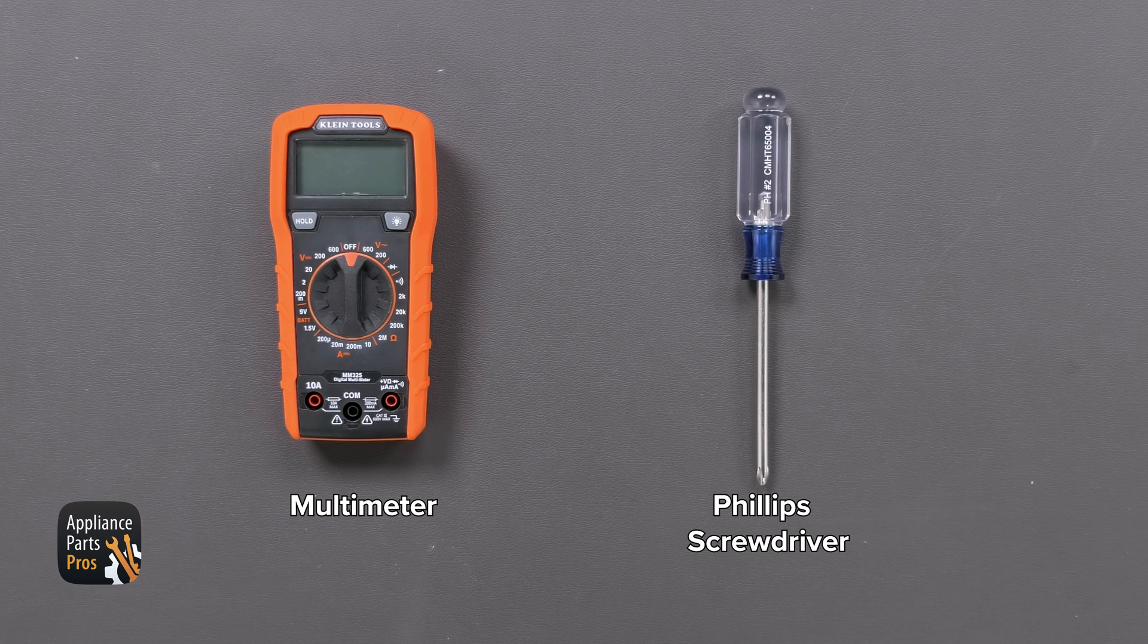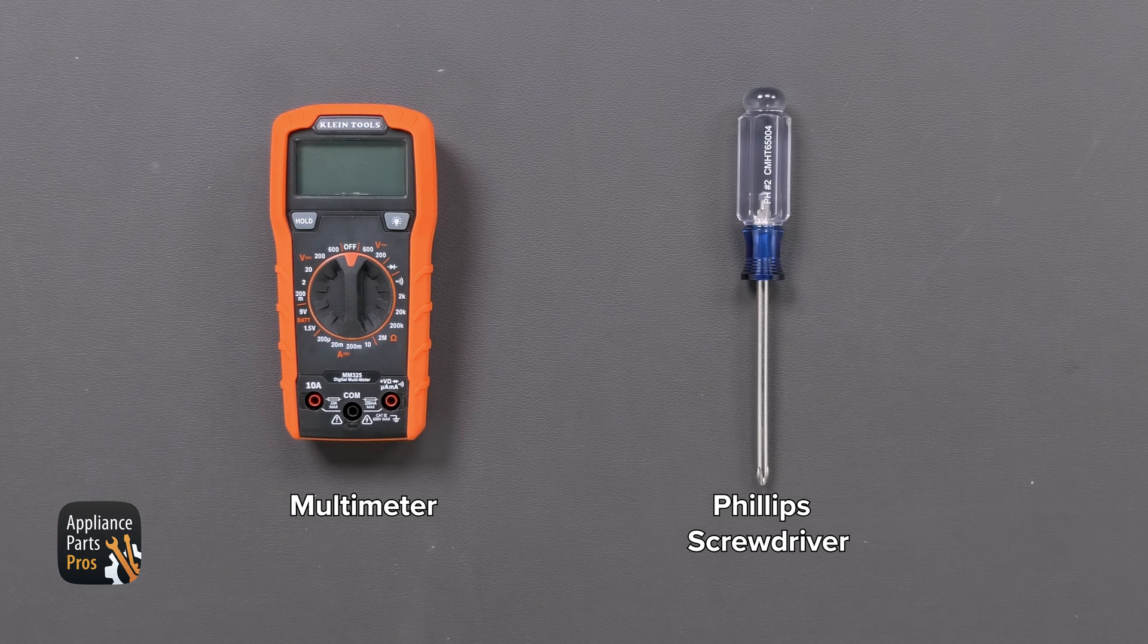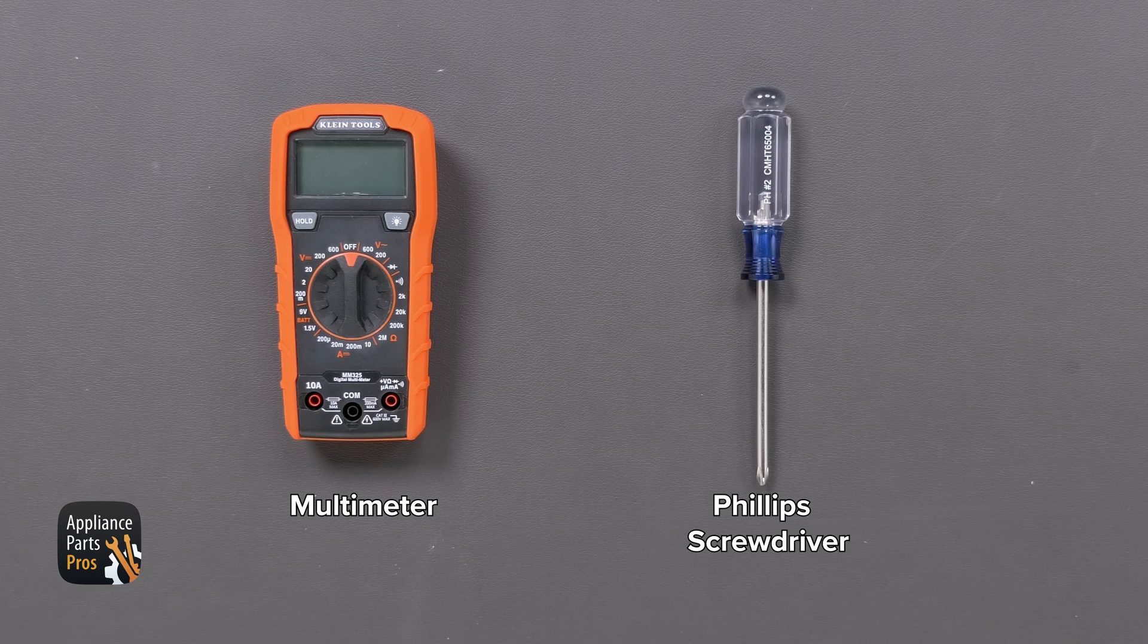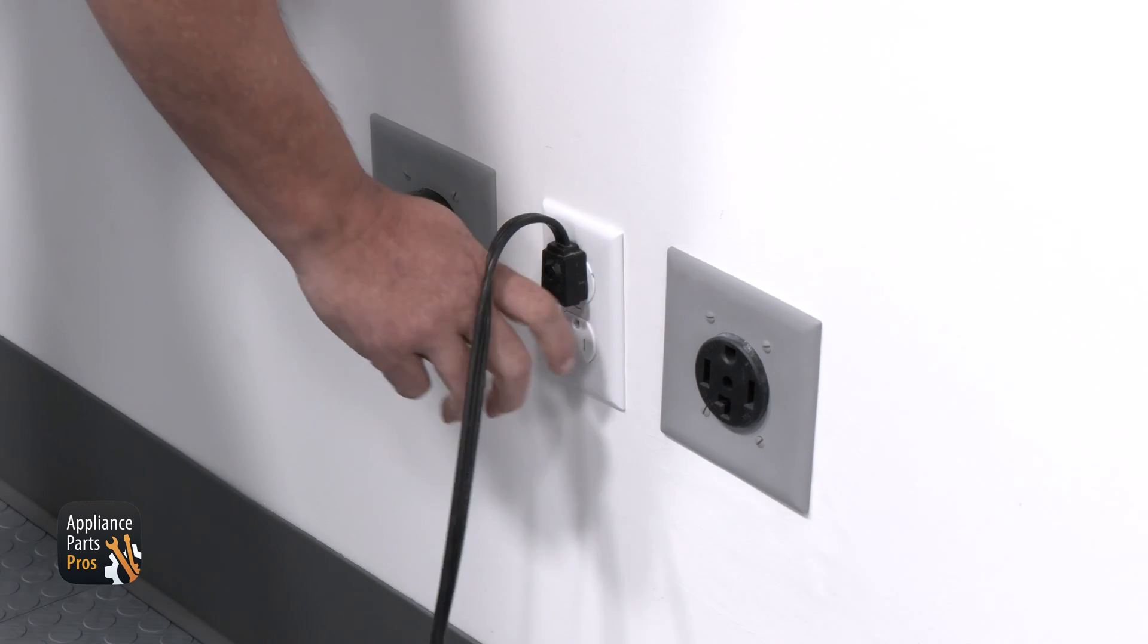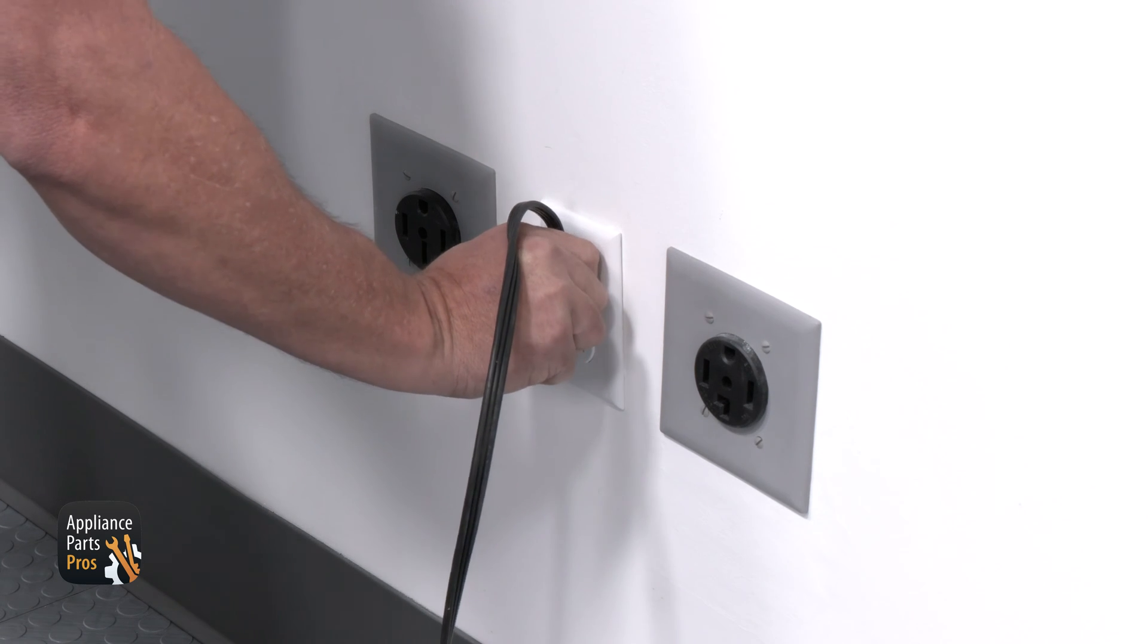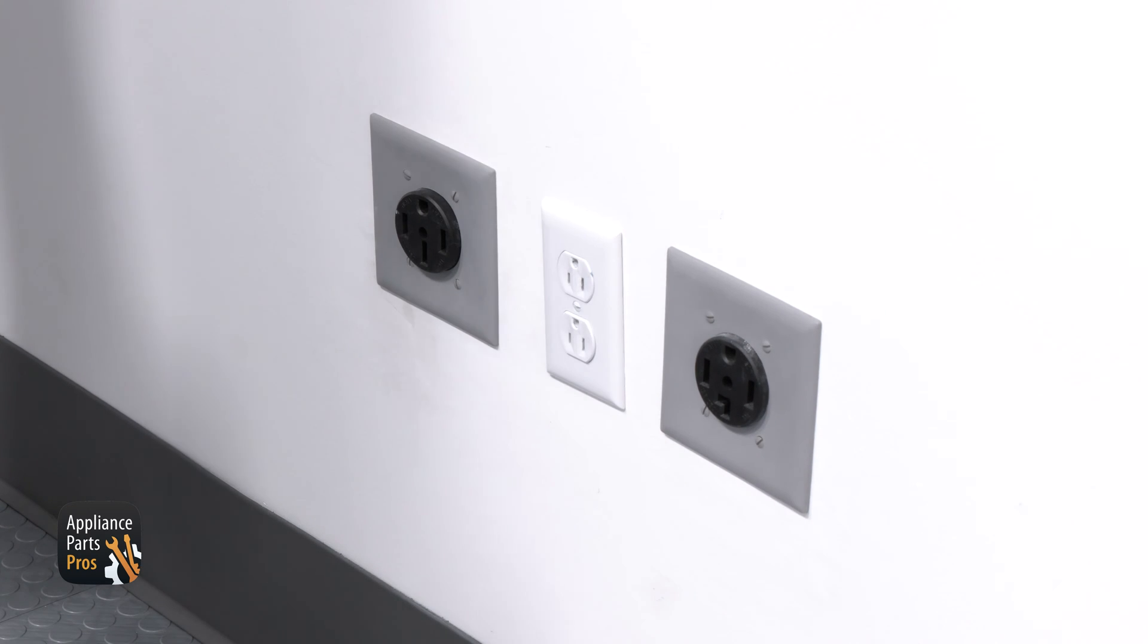Let's get our tools together. Today we're going to need a multimeter and a Phillips head screwdriver. And please remember that safety comes first. Always disconnect your refrigerator by unplugging it or switching the breaker off, as well as turning off its water supply before doing any work on it.